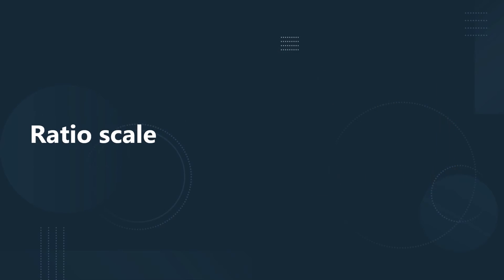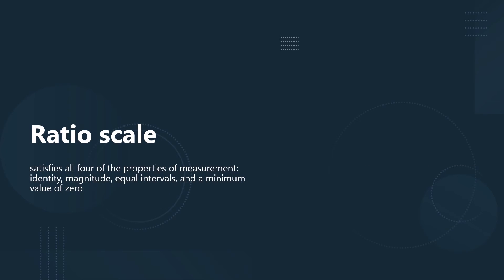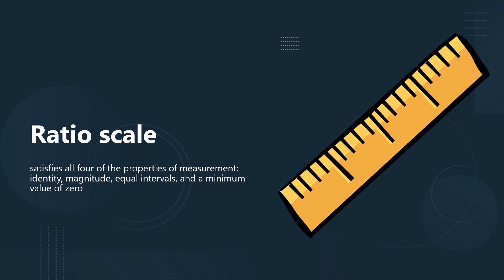Finally, the highest level of measurement is the ratio scale. The ratio scale of measurement satisfies all four properties of measurement: identity, magnitude, equal intervals, and a minimum value of 0. When we measure something using a ruler, it gives us a measure on a ratio scale. A value of 2 inches is said to be half the length of something which is 4 inches — this is not evident on an interval scale. Also, 0 is included, meaning no length, and it is not possible to measure negative lengths.